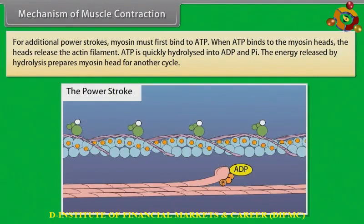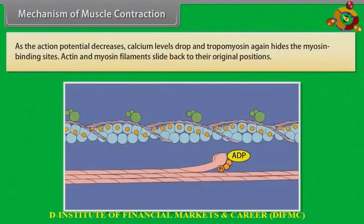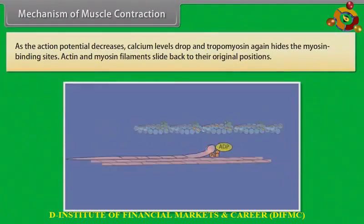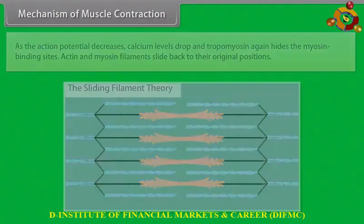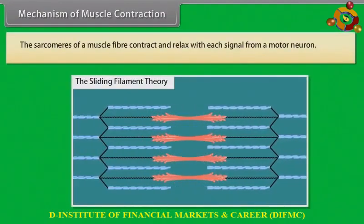For additional power strokes, myosin must first bind to ATP. When ATP binds to the myosin heads, the heads release the actin filament. ATP is quickly hydrolyzed into ADP and Pi. The energy released by hydrolysis prepares the myosin head for another cycle. As the action potential decreases, calcium levels drop and tropomyosin again hides the myosin binding sites, causing actin and myosin filaments to slide back to their original positions. The sarcomeres of a muscle fiber contract and relax with each signal from a motor neuron.